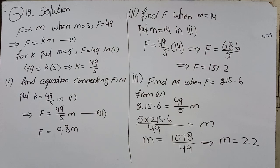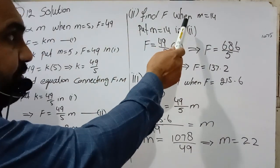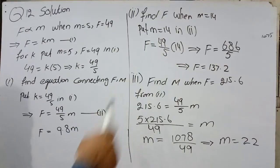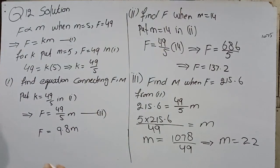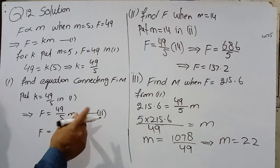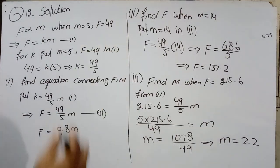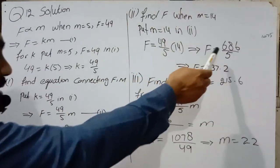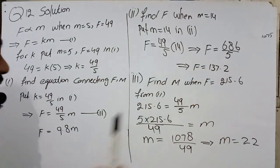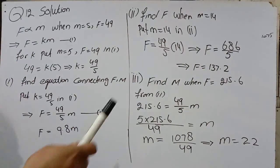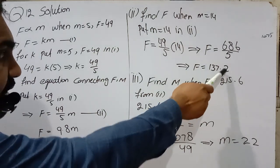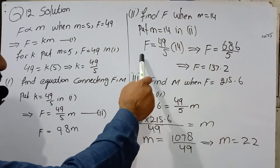Part 2: Find F when M = 14. Put M = 14 in equation 2. F = (49/5)(14). Multiply both: 686 divide 5. F = 137.2. This is the value of F.